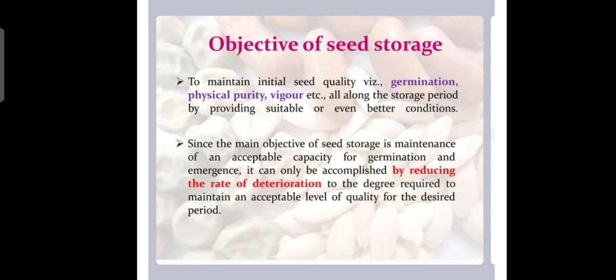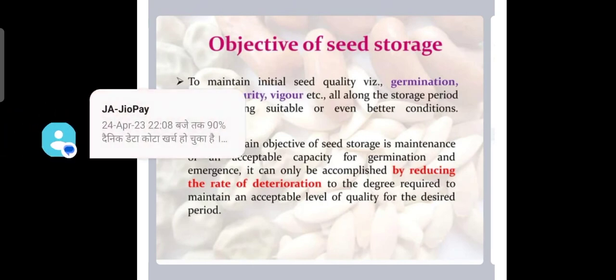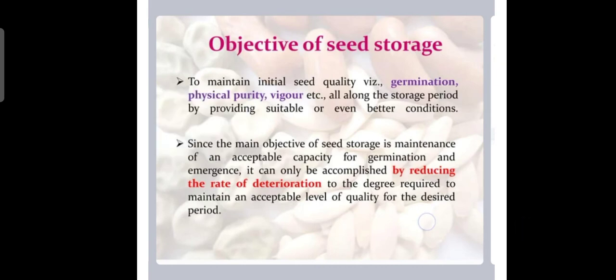Since the main objective of seed storage is maintenance of an acceptable capacity of germination and emergence, it can only be accomplished by reducing the rate of deterioration to the degree required to maintain an acceptable level of quality for the desired period. Seed germination percentage should remain correct for a long time.